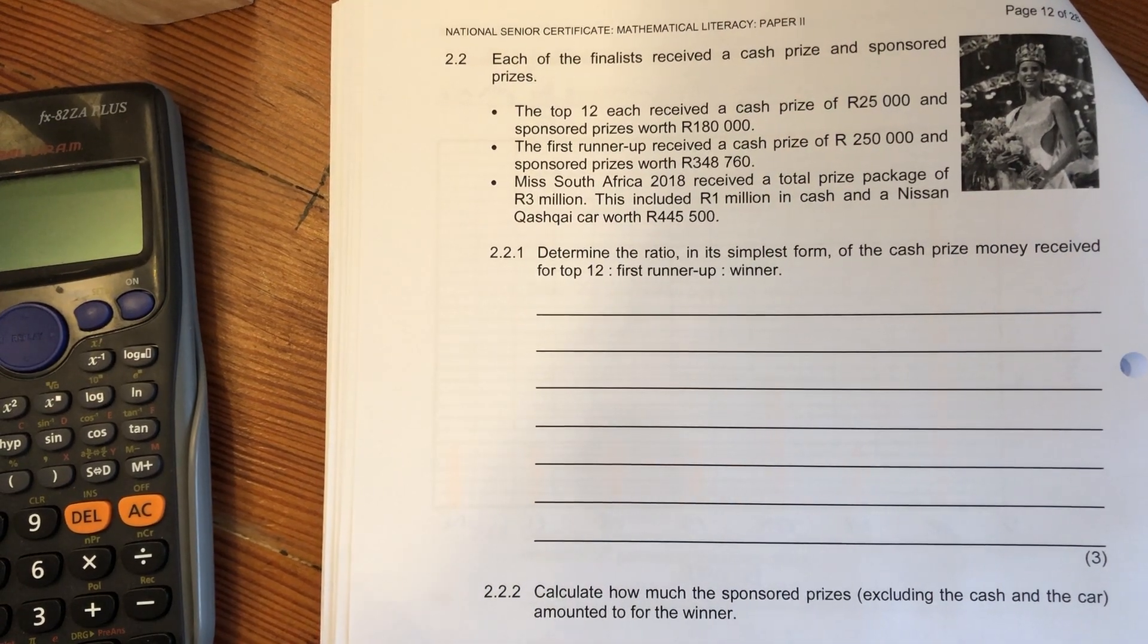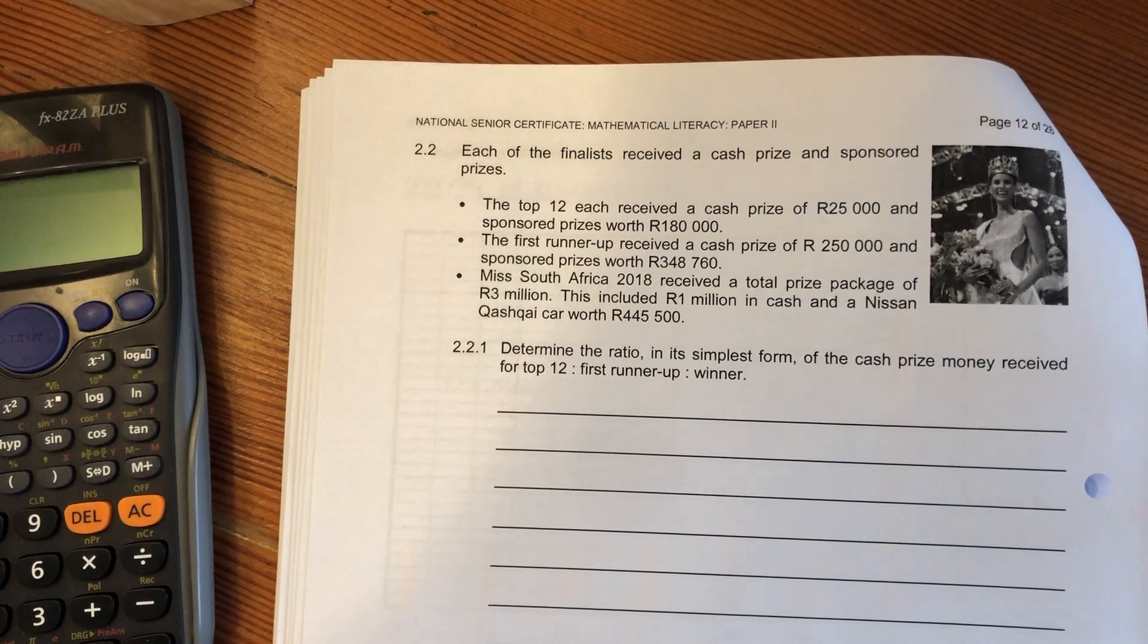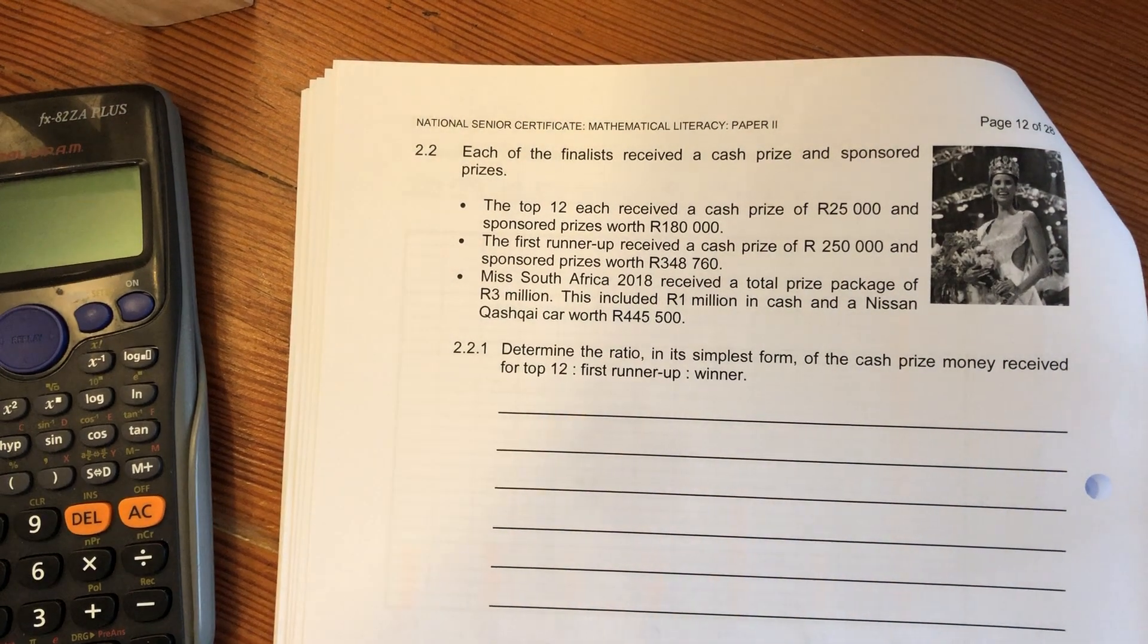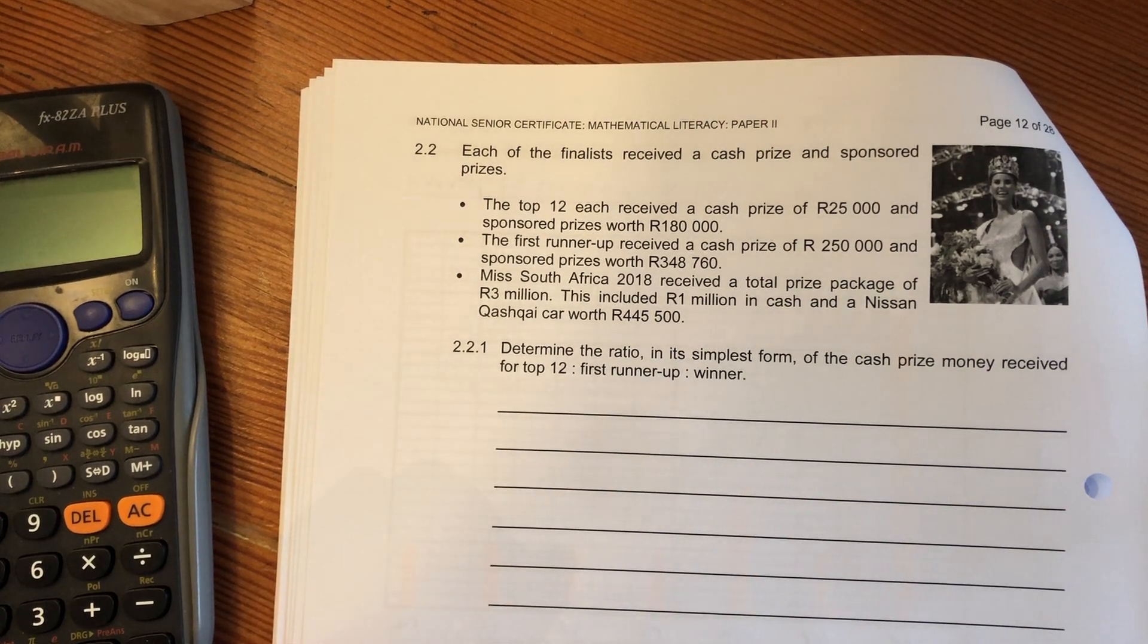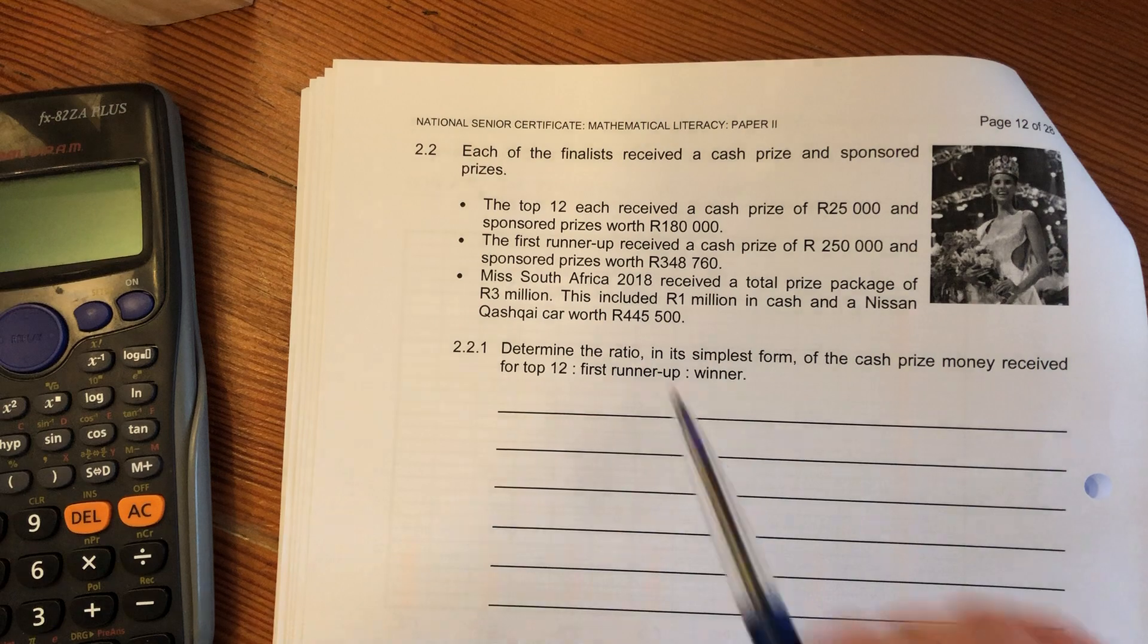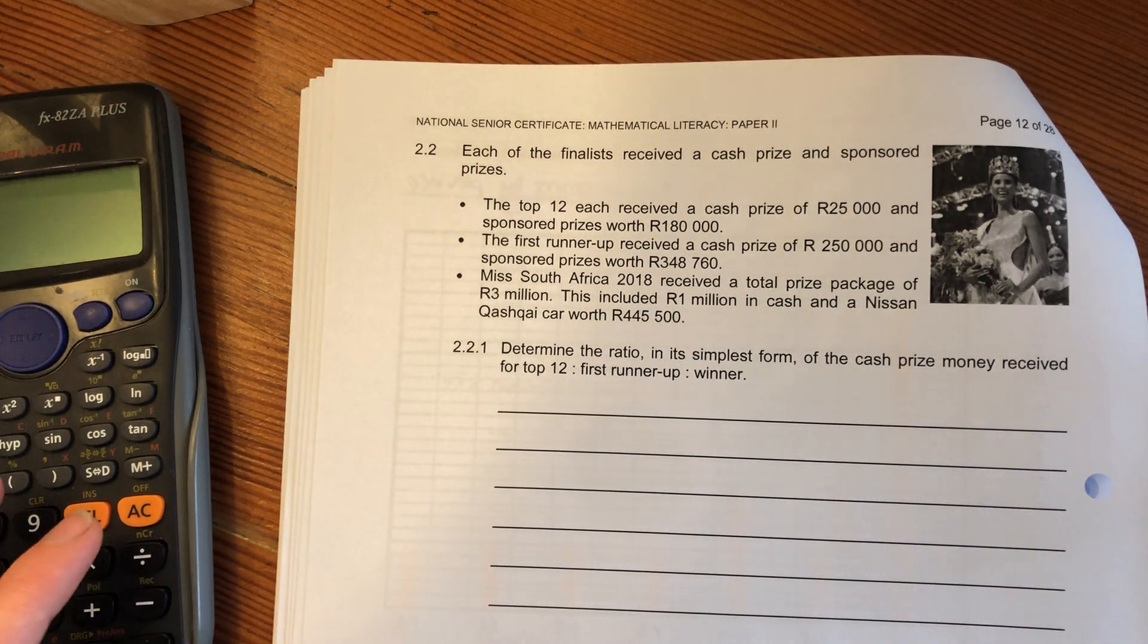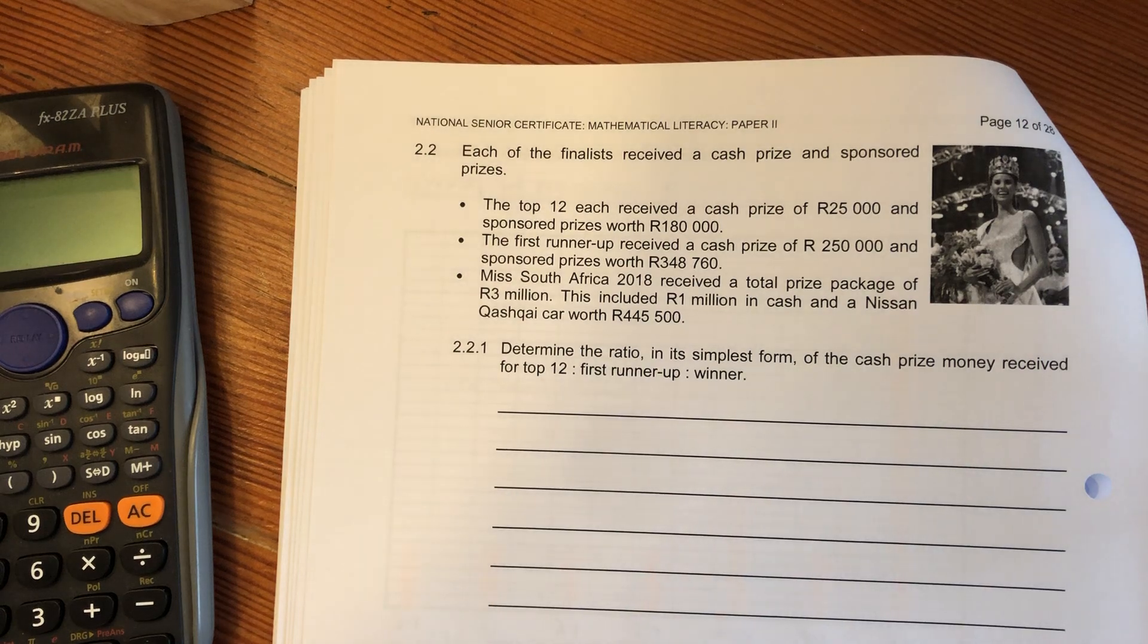Now we're moving on to 2.2. Each of the finalists received a cash prize and sponsored prizes. The top 12 each received a cash prize of R25,000 and sponsored prizes worth R180,000. The first runner-up received a cash prize of R250,000 and sponsored prizes.